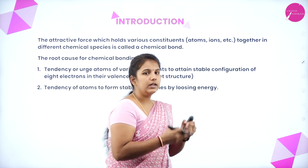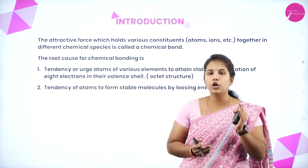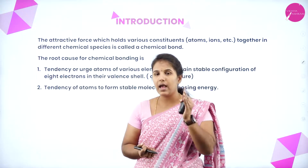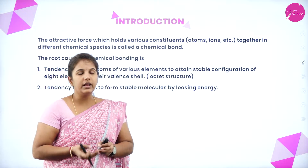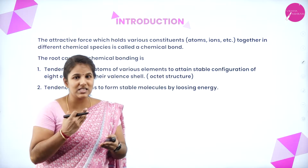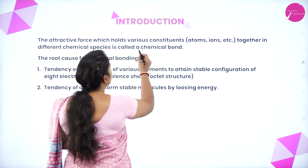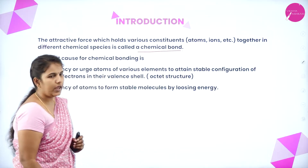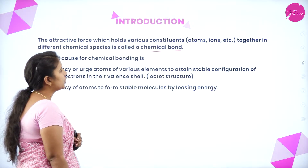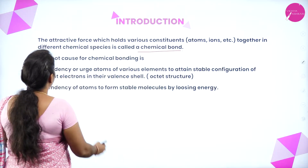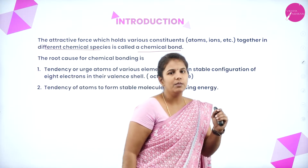We already know that chemical bond is a kind of force of attraction between the constituents — it may be atoms, molecules, or ions. When this force of attraction exists between any two atoms, it results in the formation of a chemical bond. It is the attractive force which holds the various constituents together in different chemical species, and this is known as a chemical bond.